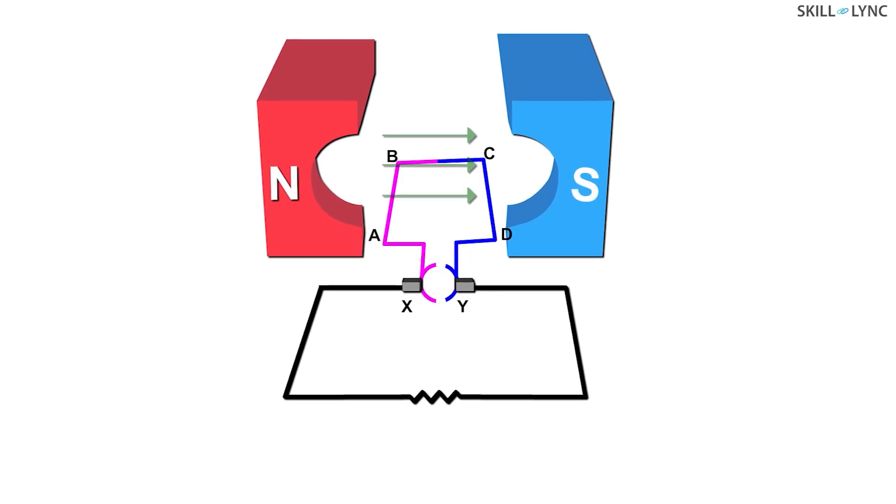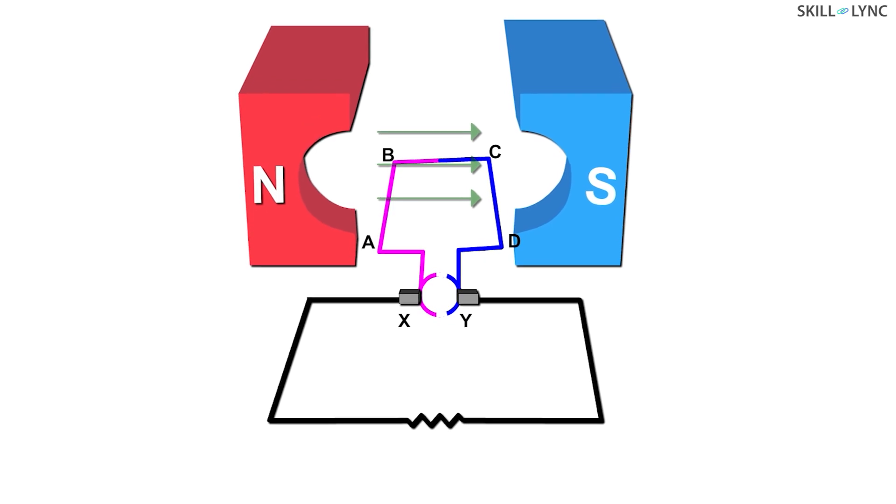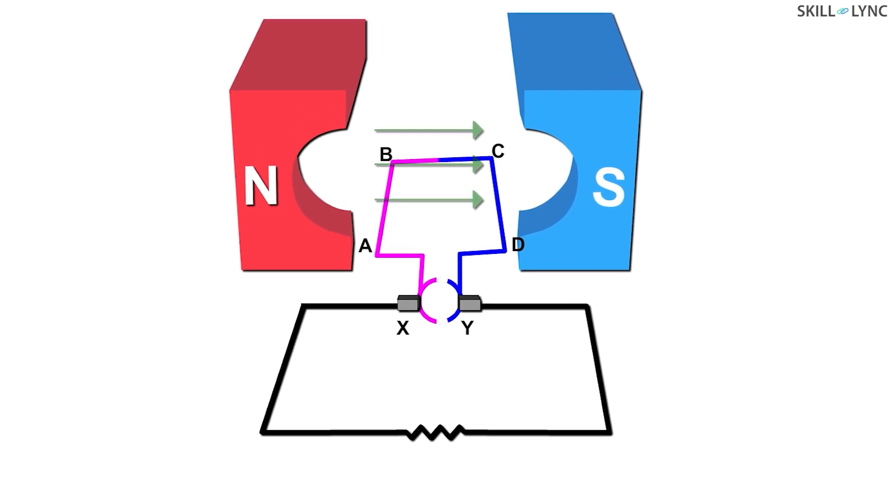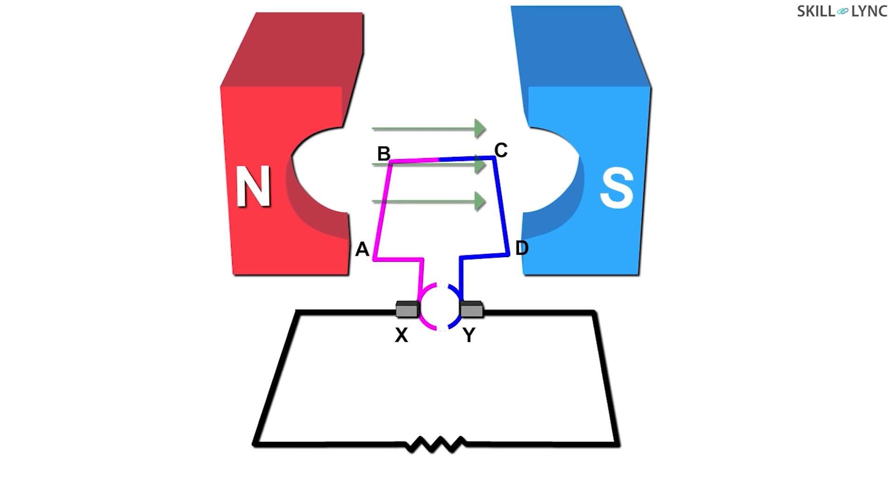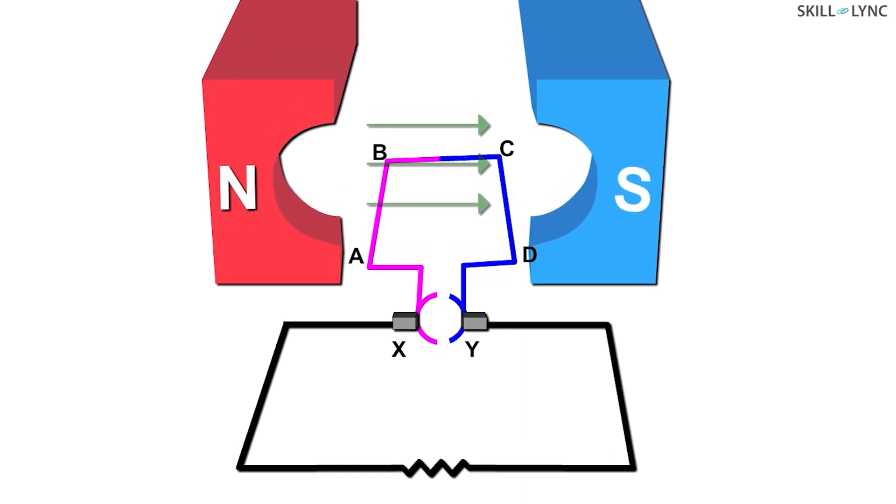Now, in the DC generator, current is induced when the armature plane is perpendicular to the magnetic field. To understand the working, let us name the two commutators X and Y. X is connected to the positive side and Y is connected to the negative side.